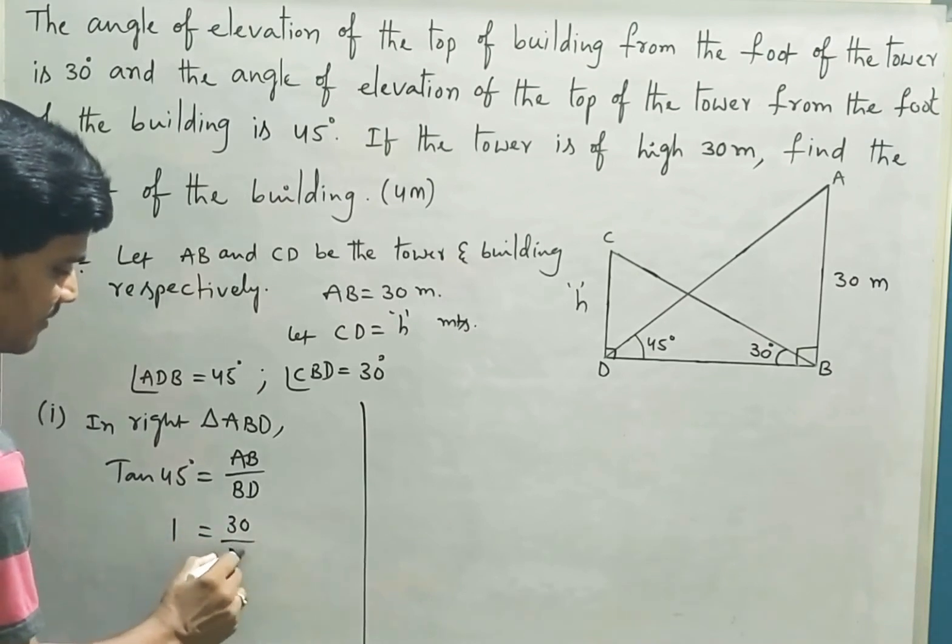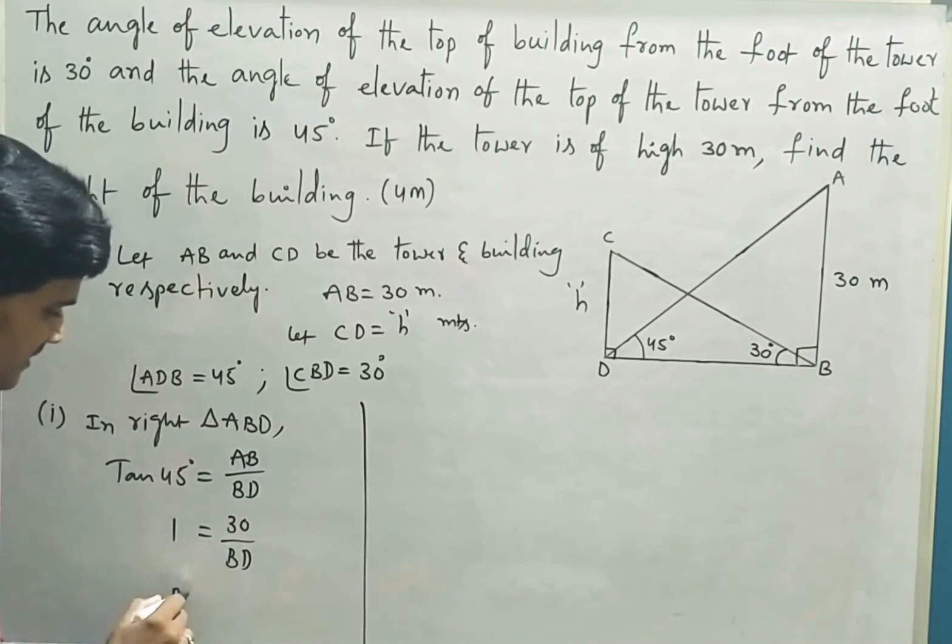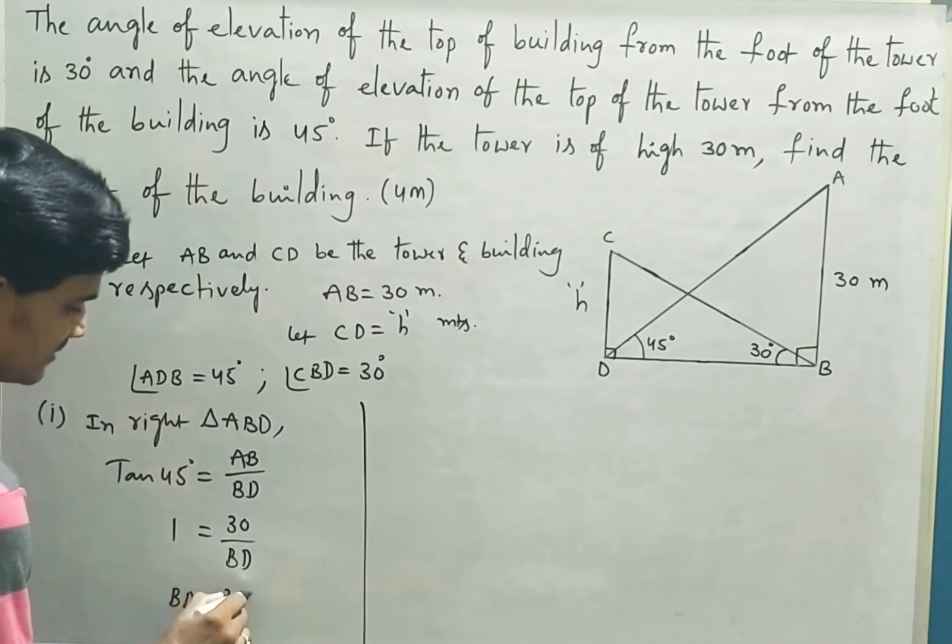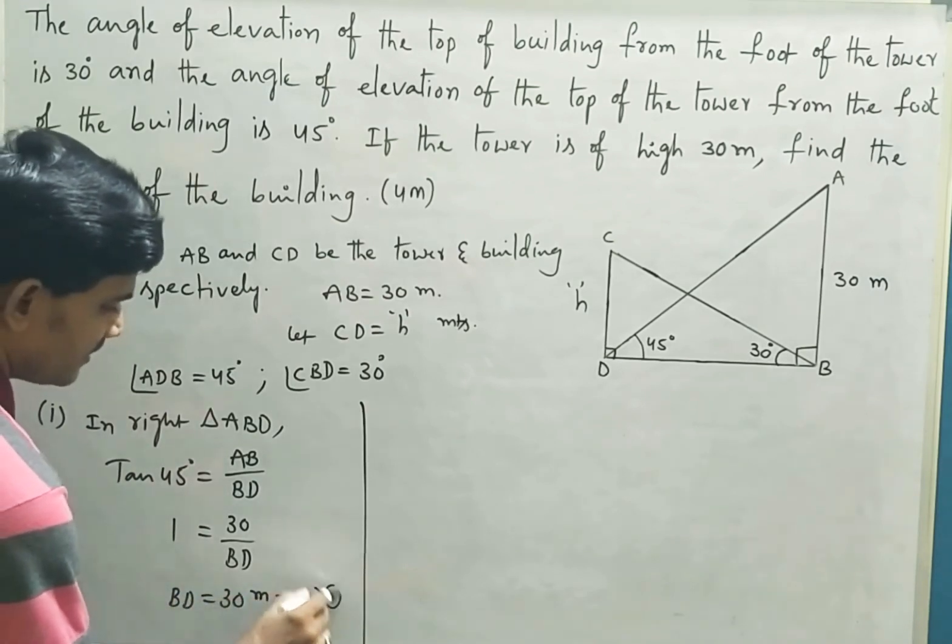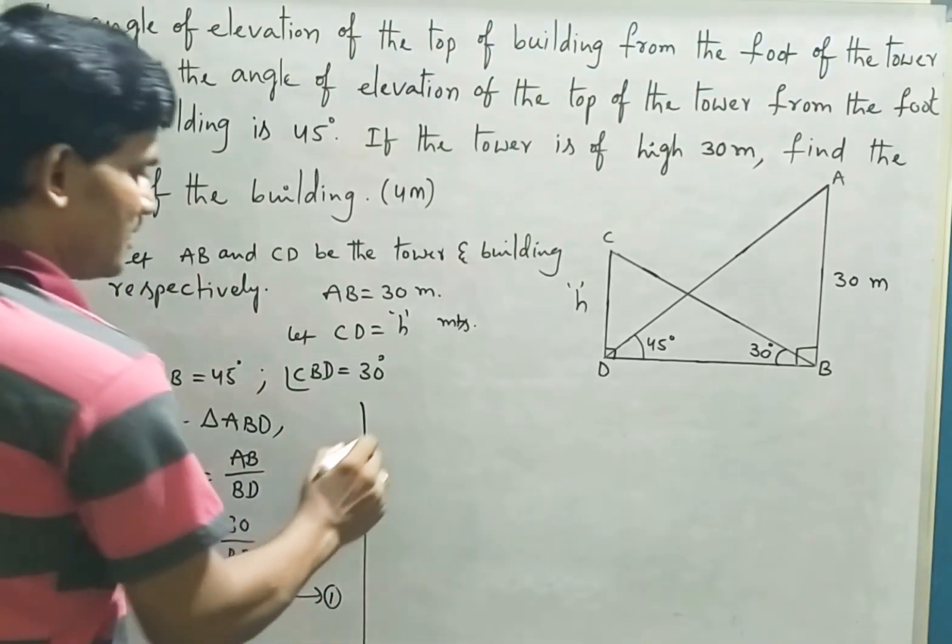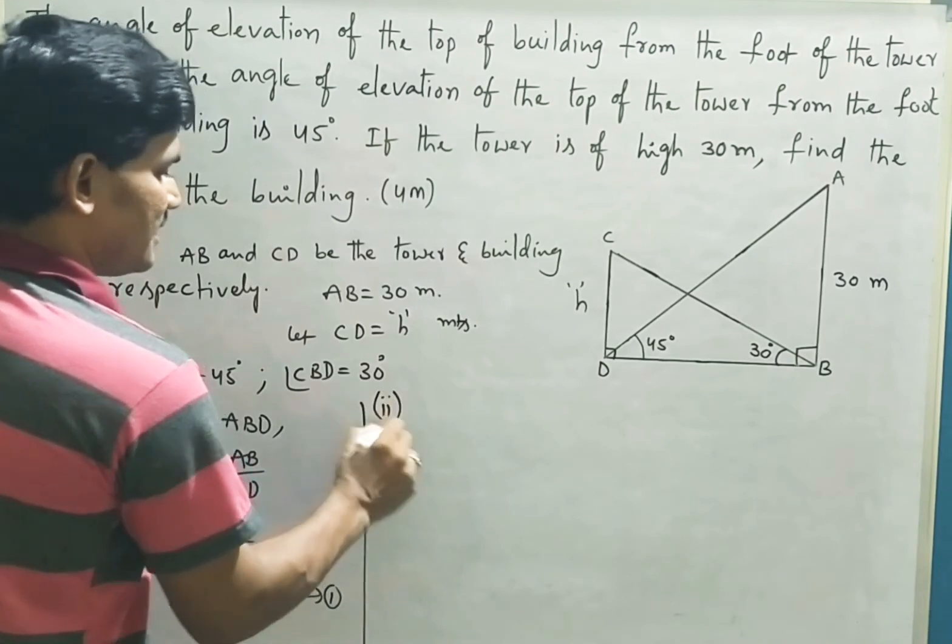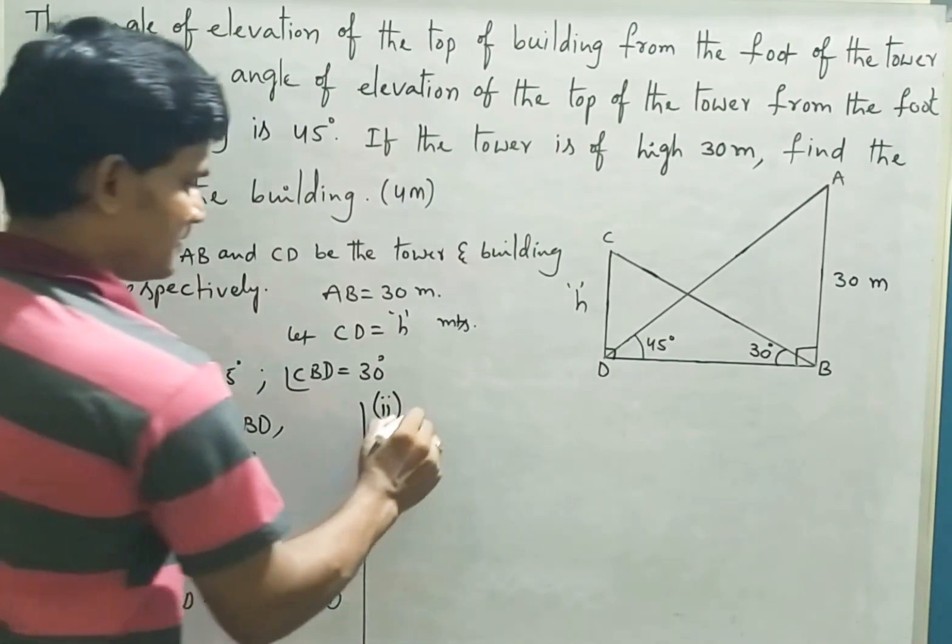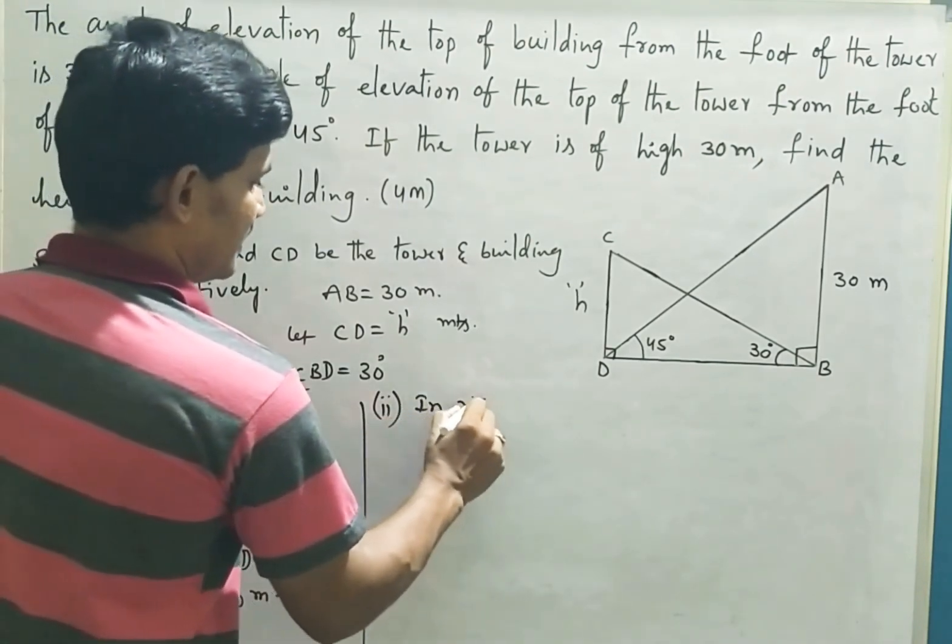Which means BD is equal to 30 meters. Let it be result one. Now let us take the second right triangle, that is in right triangle CDB.